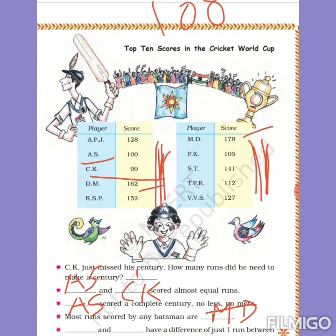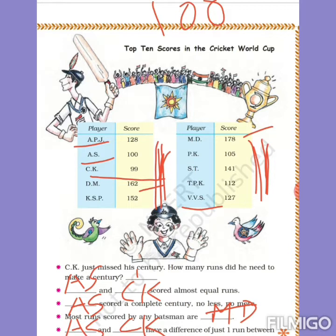Next question: Dash and dash have a difference of just one run between them. Look at AS and CK - the difference between their scores is exactly one run. There is also another answer: APJ and VVS. Between APJ and VVS there is also a difference of just one number, so you can write APJ and VVS as well.